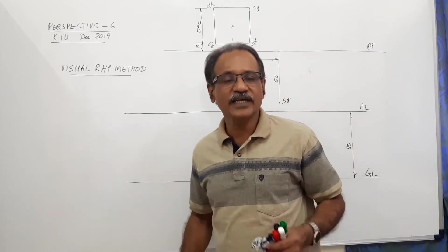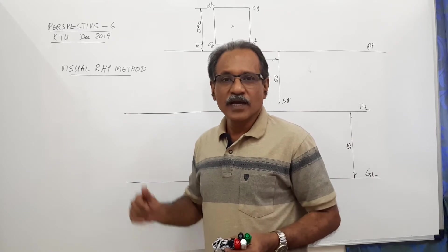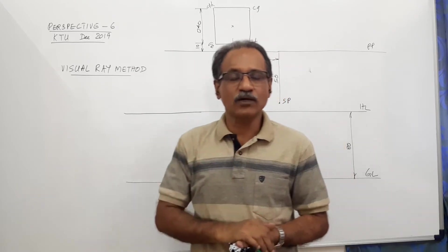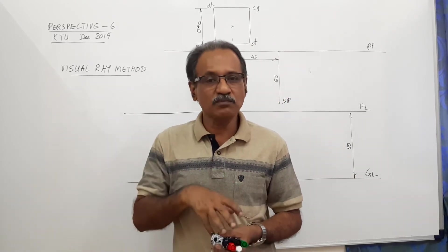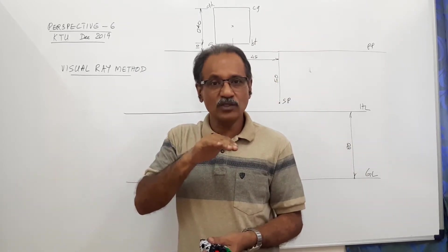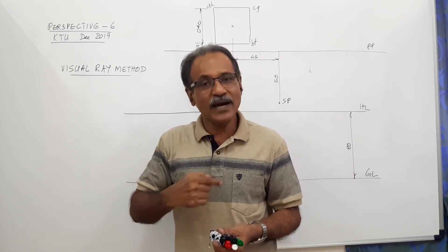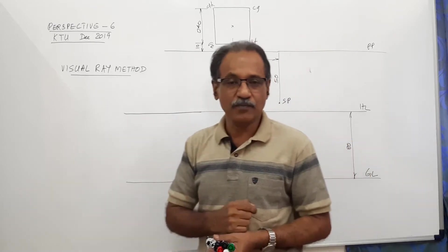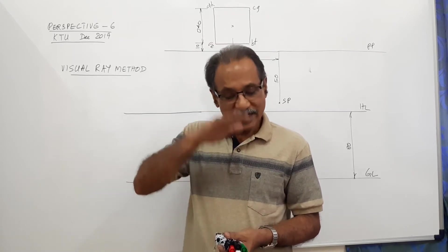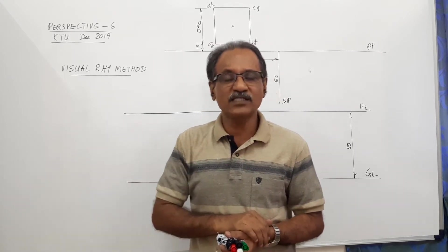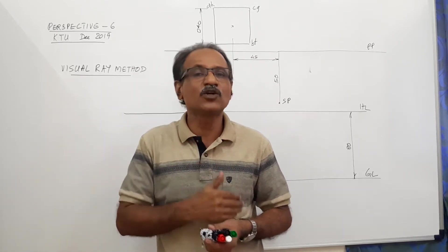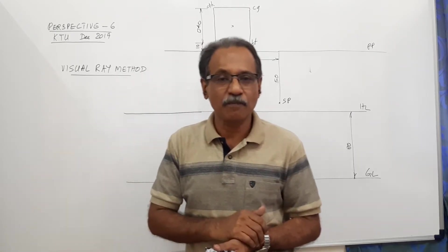Hi students, welcome to engineering graphics class. I am Dr. Vinod Kumar. In this problem, a square prism with 40mm side and 60mm axis is standing on the ground with one rectangular face parallel to PP and 10mm behind the picture plane.